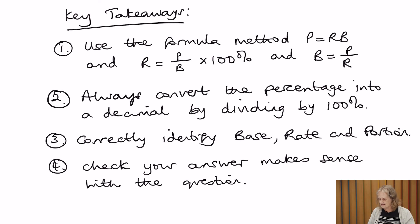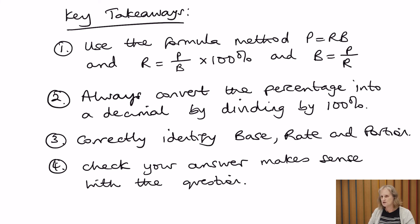The key takeaways for percent: first, use the formula P = RB — portion equals rate times base — rearranged as R = (P ÷ B) × 100% to find the rate, and B = P ÷ R to find the base. Second, always convert the percentage to a decimal by dividing by 100. Third, correctly identify the base, rate, and portion before calculating. Fourth, always check that your answer makes sense in context.